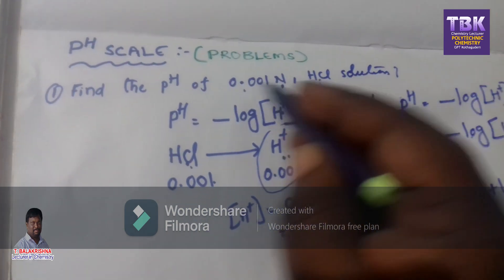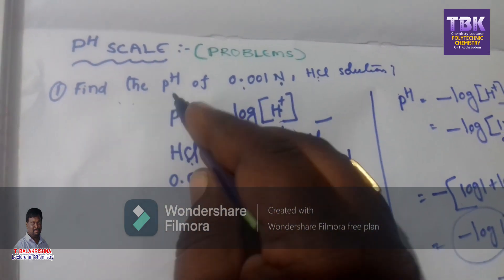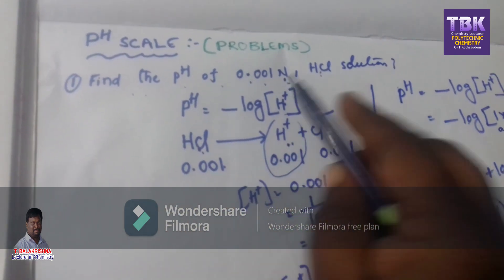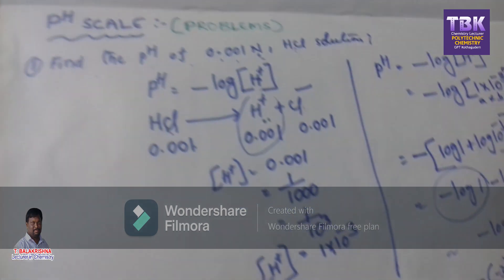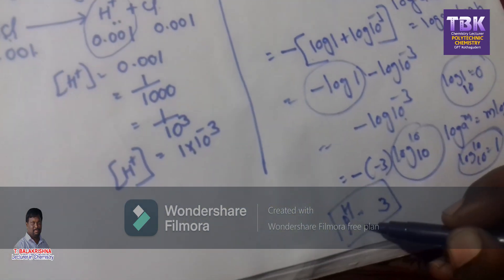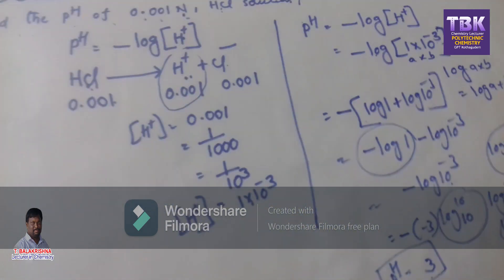So, the pH of 0.01 normality HCl solution is 3.